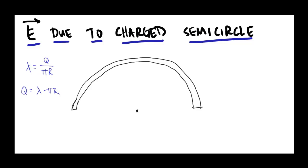I'm going to approach this the same way I approached the charged ring — I'm going to cut this into little elements dq. The way to think about this in terms of the circle: if I draw a radius to my center point, here's this radius r, and I draw another one nearby, then this little arc length subtends this tiny angle right here — this infinitesimally tiny angle dθ. So we've got a little element with charge dq subtended by little angle dθ.